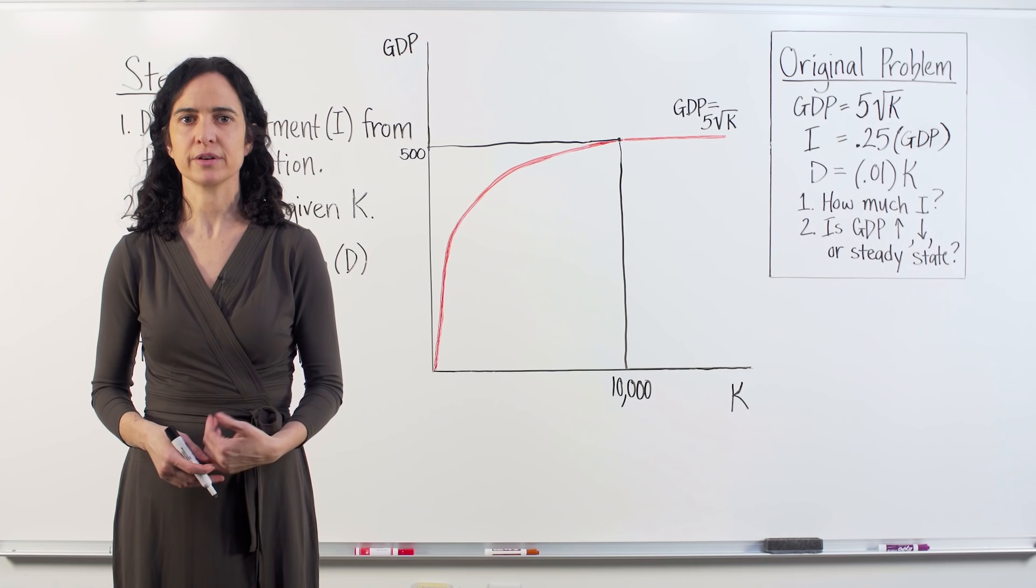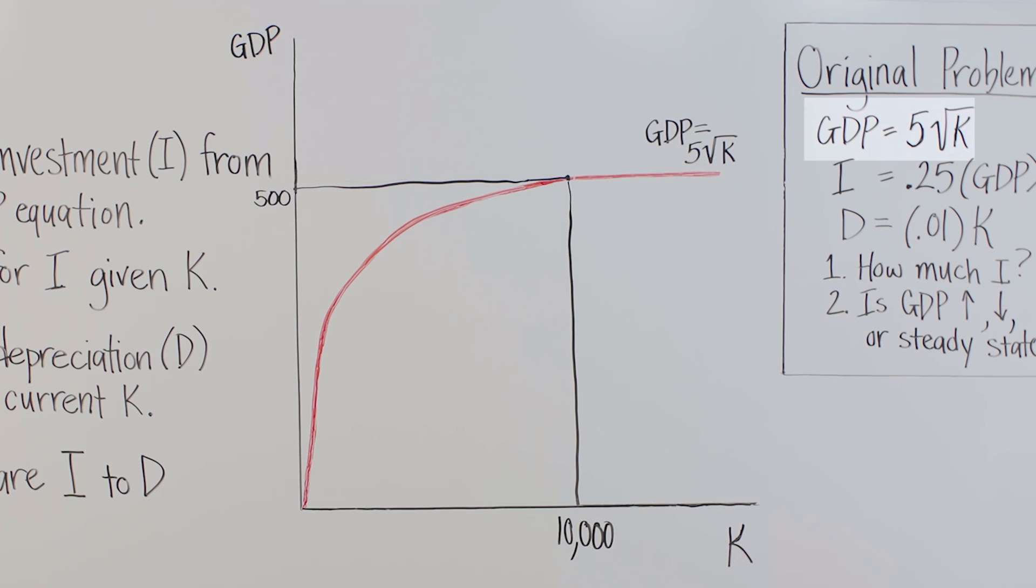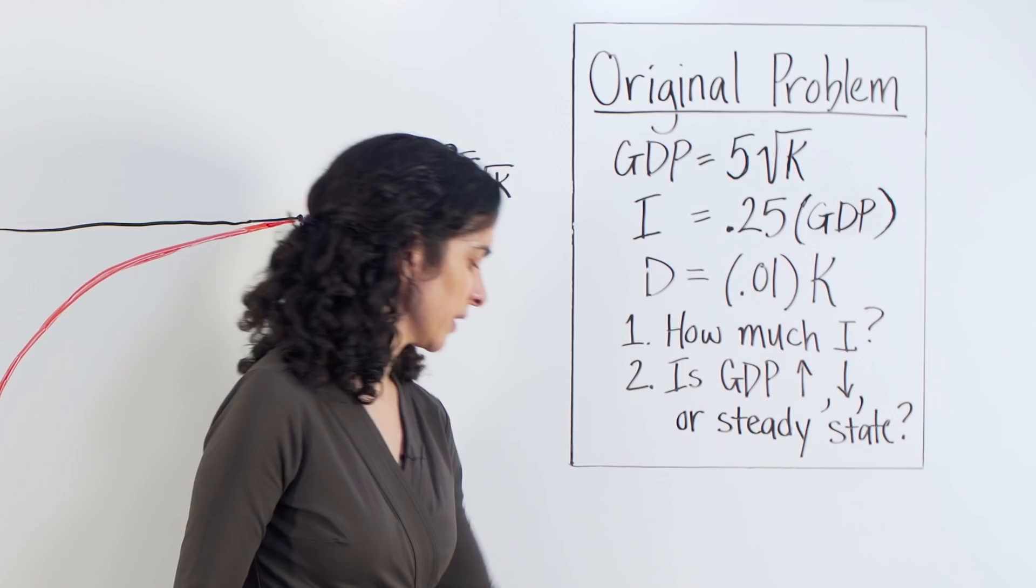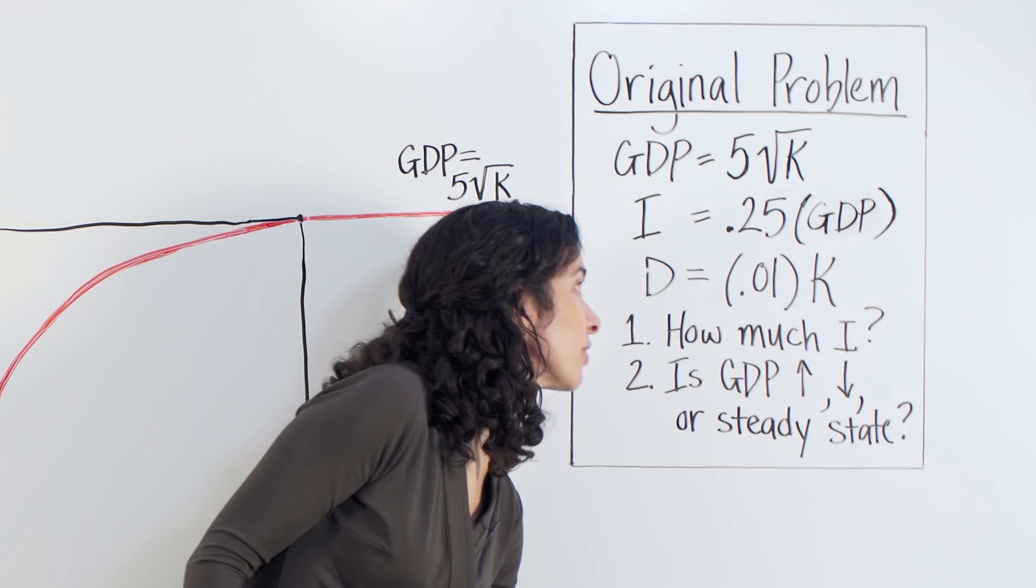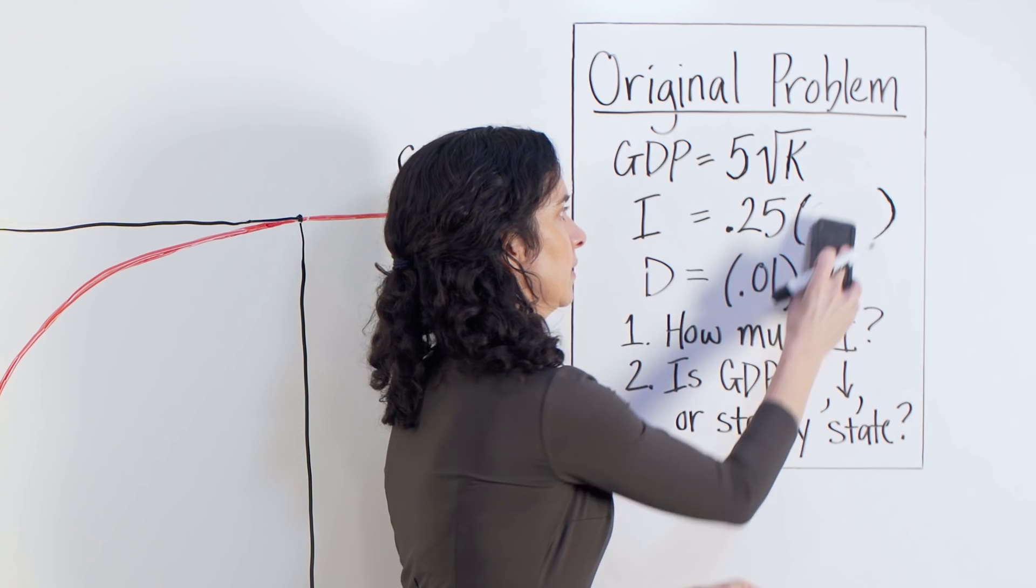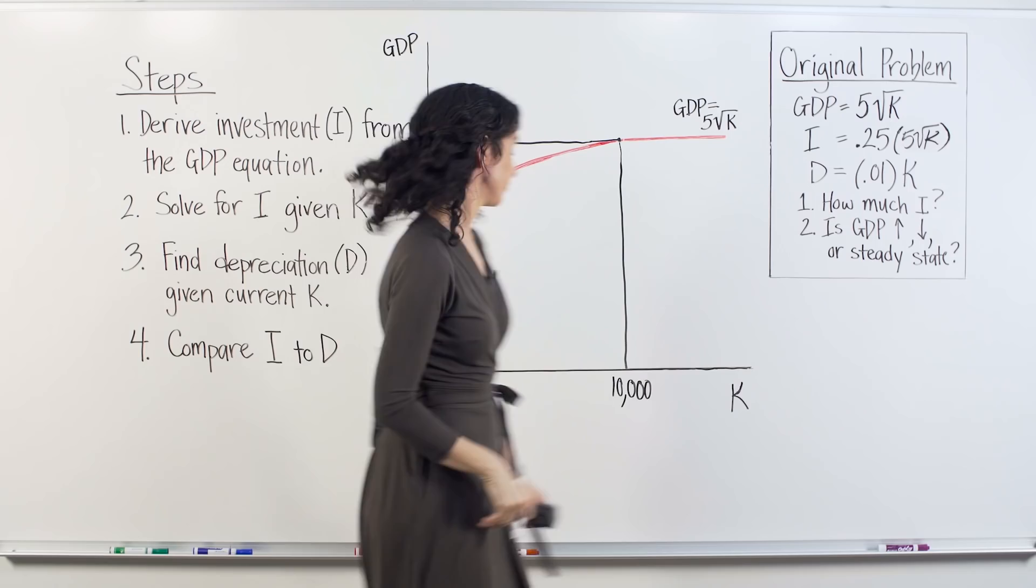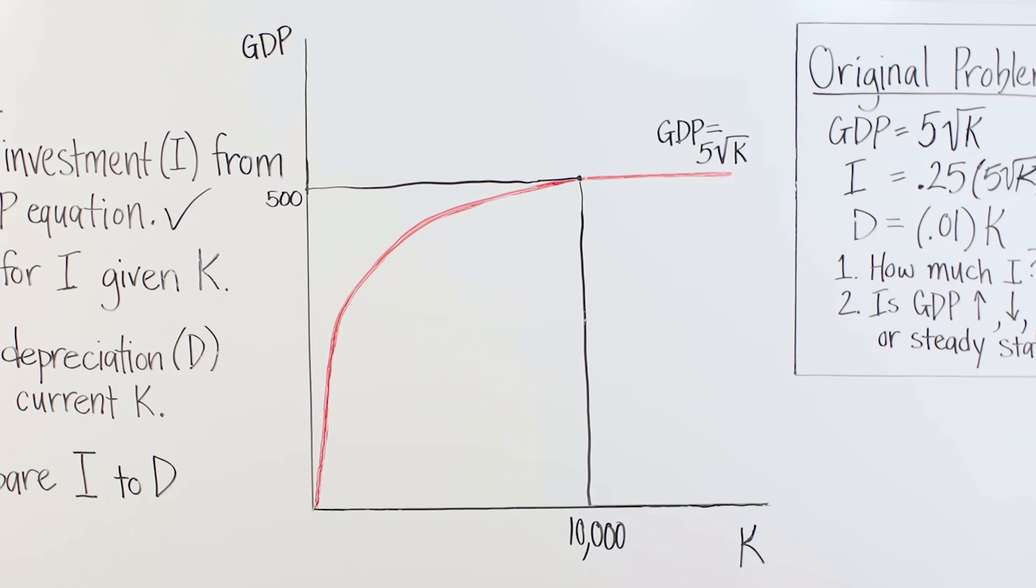Now, we know that GDP is 5 times the square root of K. And we also know that investment is 25% of GDP. Therefore, we can substitute 5 times the square root of K in for GDP. And that's it for step one. To take a shortcut, since we know GDP in this instance is 500, 25% of 500 is 125. This country is investing $125 into capital accumulation. And that's the answer to step two.